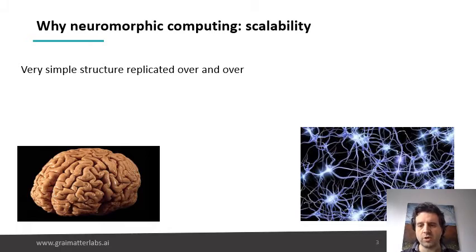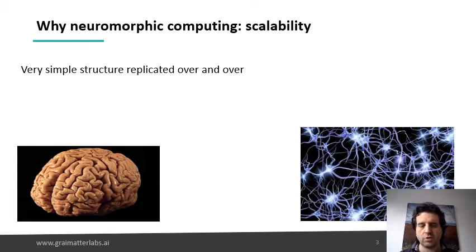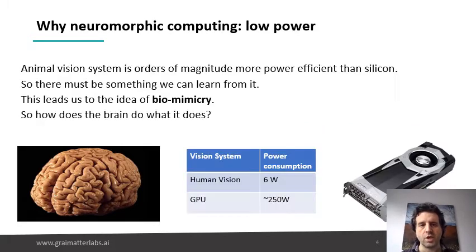If you look at a normal processor system like the ones we use in embedded systems, in laptops, in servers, one of the great difficulties is always this memory distribution, which is natural to the brain structure. Another big advantage of neuromorphic computing — and probably the one that I would like to discuss today the most — is related to power consumption.